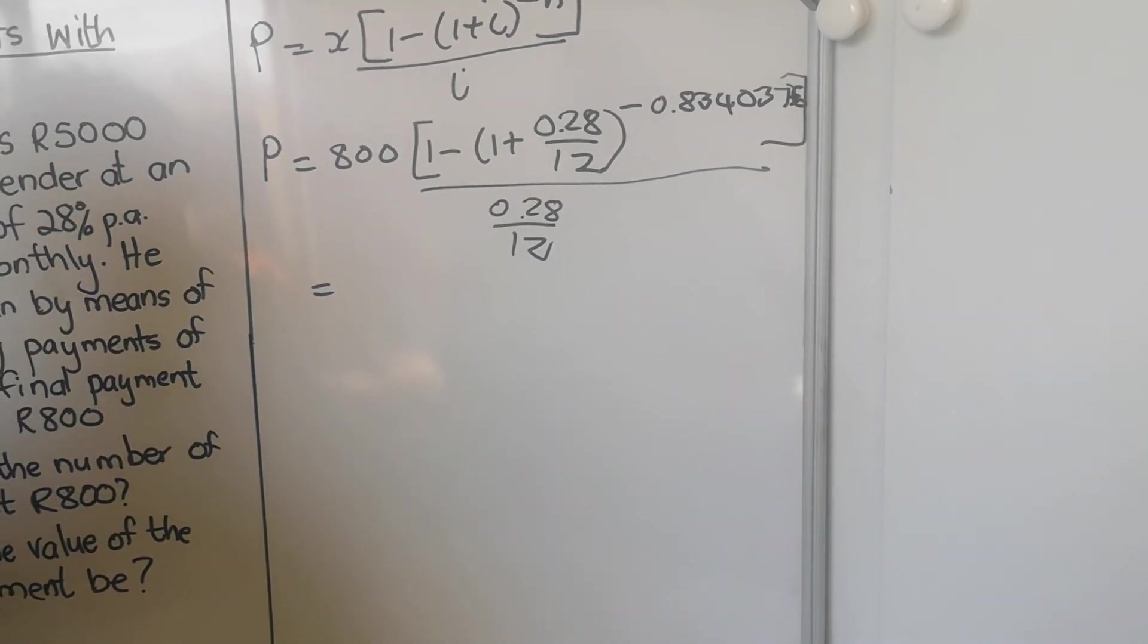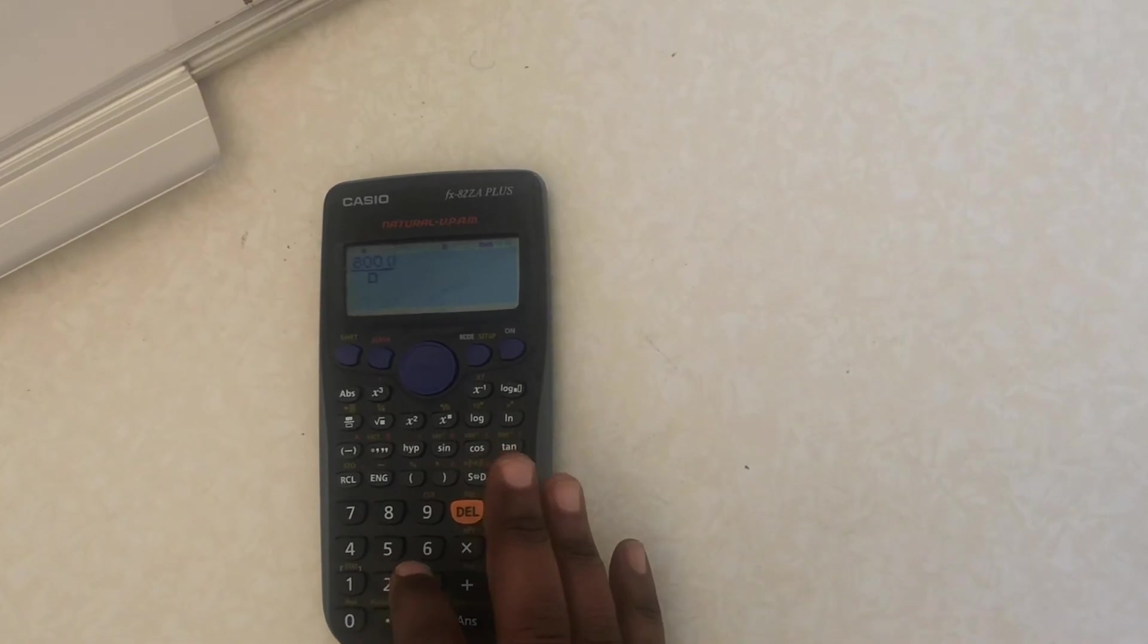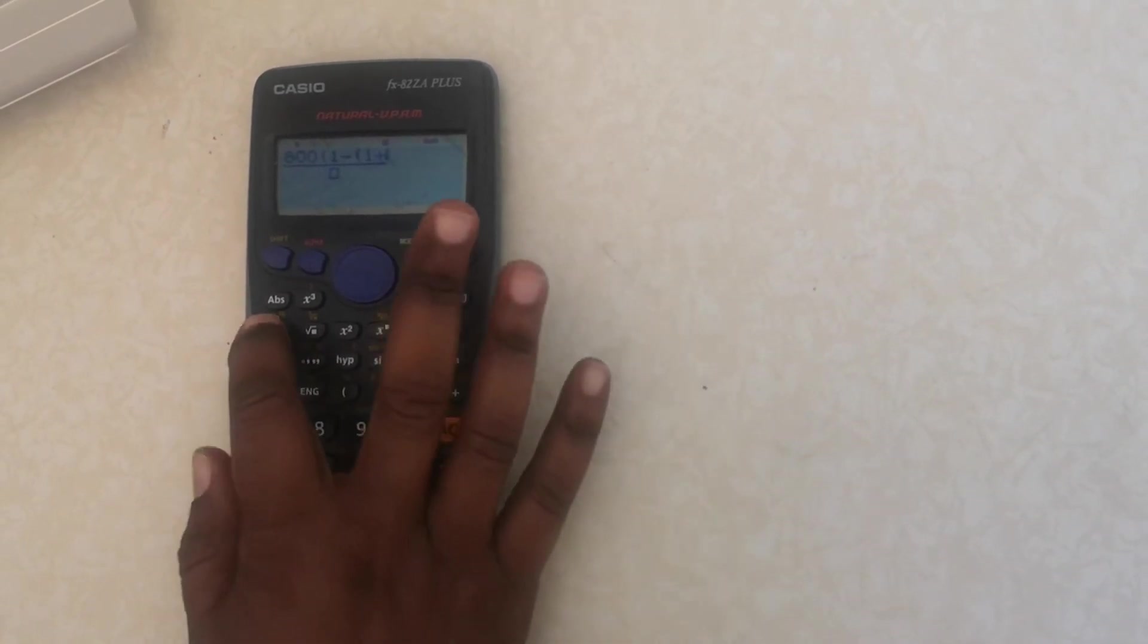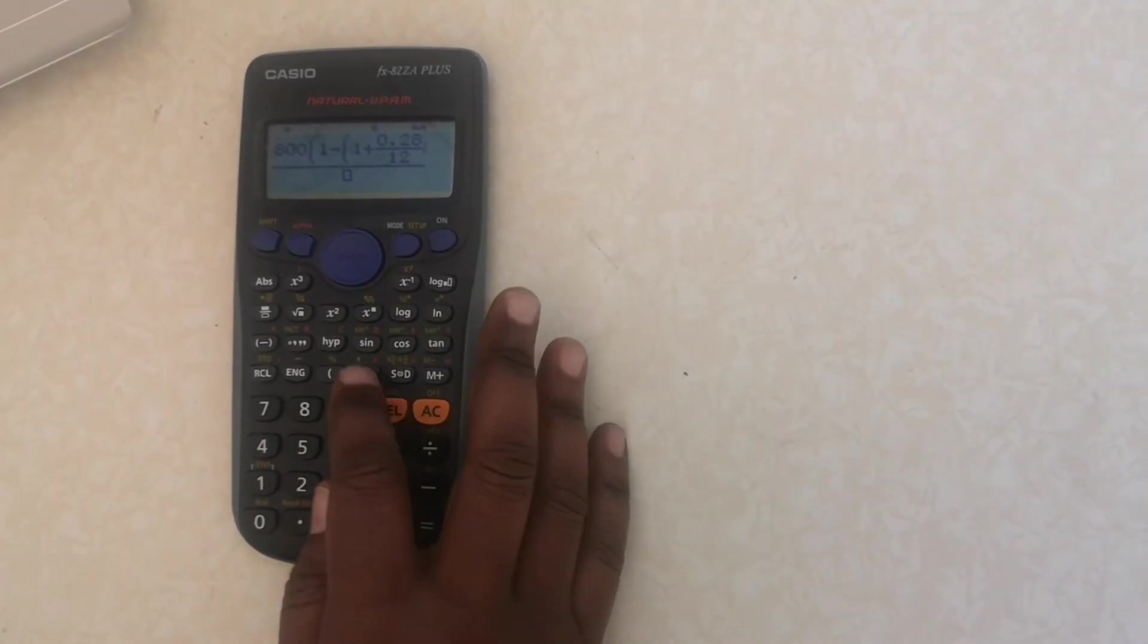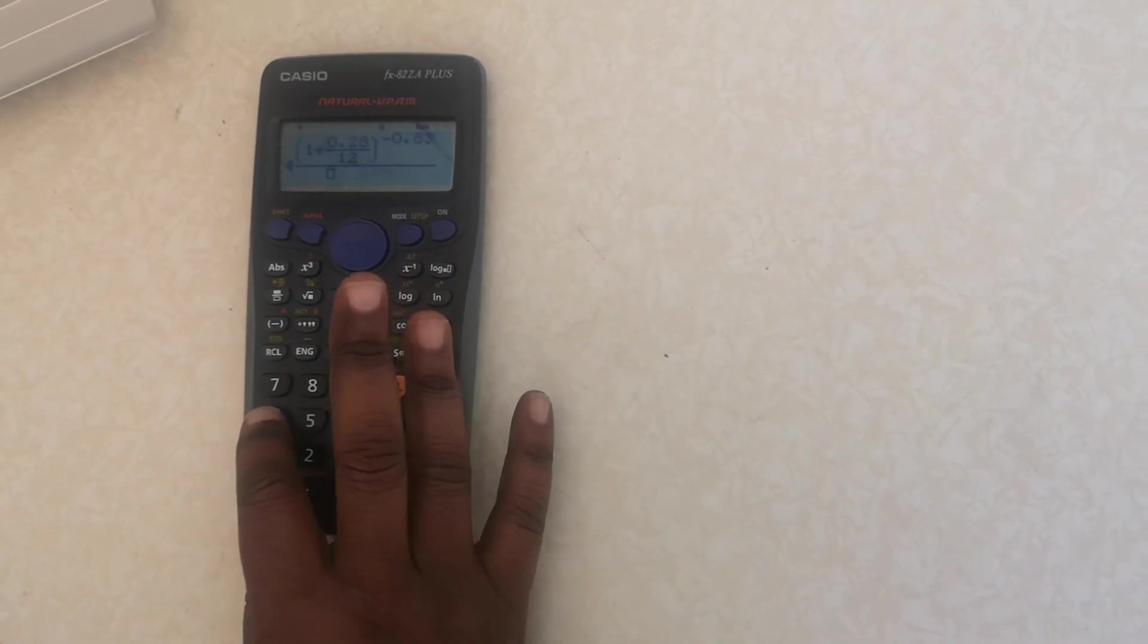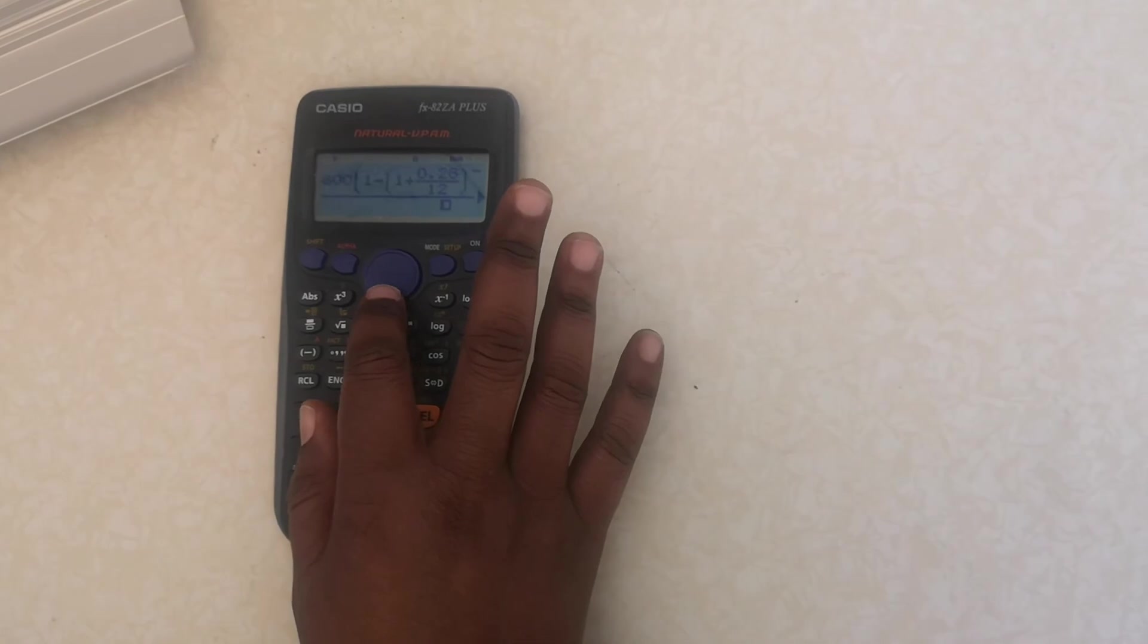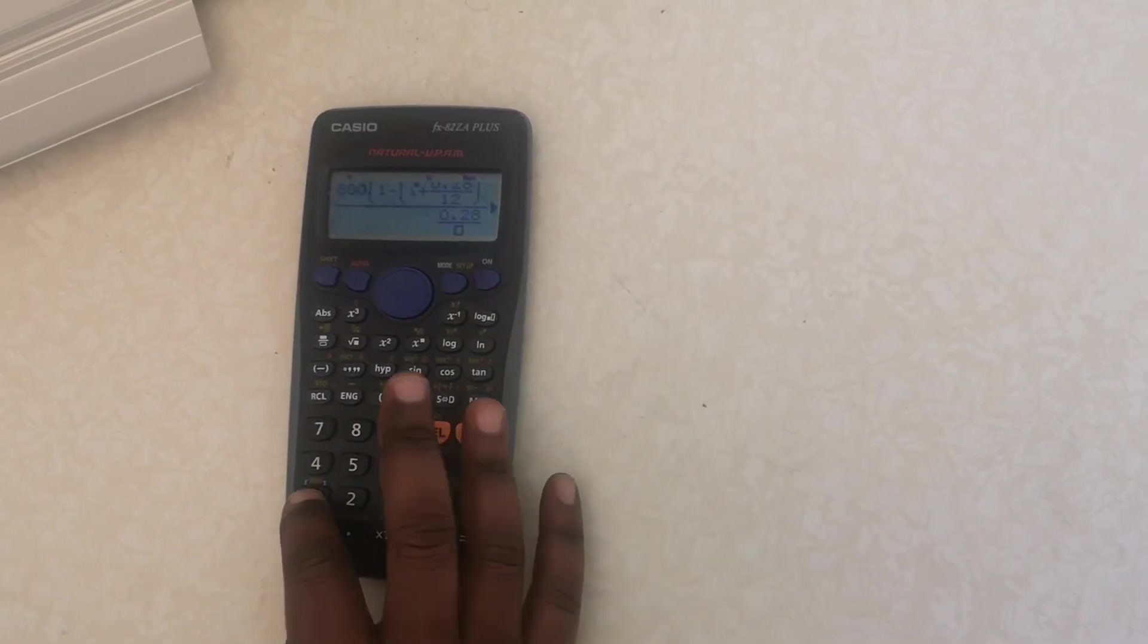And then you punch all of that in your calculator. You go fraction 800, open bracket, 1 minus, open bracket, 1 plus fraction 0.28, go down 12, close bracket, and then fraction, then go minus 0, write all the decimals: 0.8340376. Then down, then fraction for the interest: 0.28 over 12.